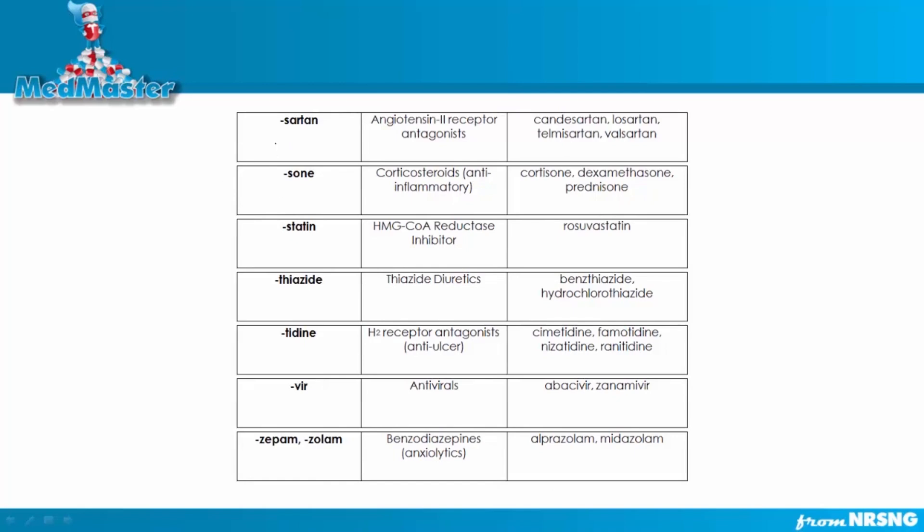Next, let's talk about Sartans. Sartans aren't as common as ACE inhibitors, though they're both antihypertensives. But anytime you see a Sartan, Valsartan, Losartan, you're thinking angio-2 receptor antagonists, okay? And that's going to be given to also lower blood pressure.